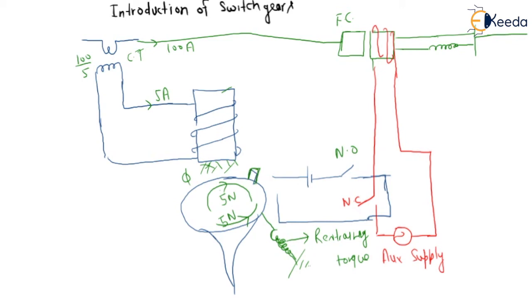This is normally open, and when this is normally open, then this is normally closed. Normally closed means auxiliary supply has been given to this moving pole of this circuit breaker.